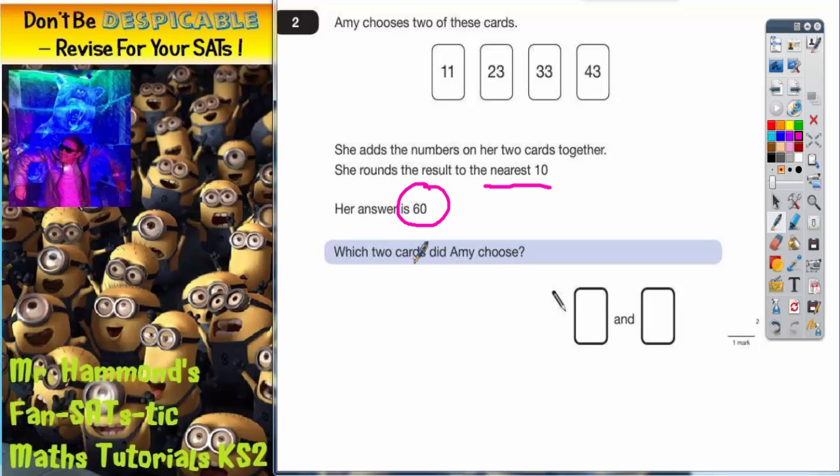The easiest way to do this is just to pick some numbers that you think it might be, add them together, round to the nearest 10, and see if you get 60. Sooner or later you're going to get the right answer. So for example, let's test 11 and 43. There's no guarantee you'll get the right answer straight away. 1 and 3 is 4, 1 and 4 is 5, so that's 54. And 54 rounds to 50.